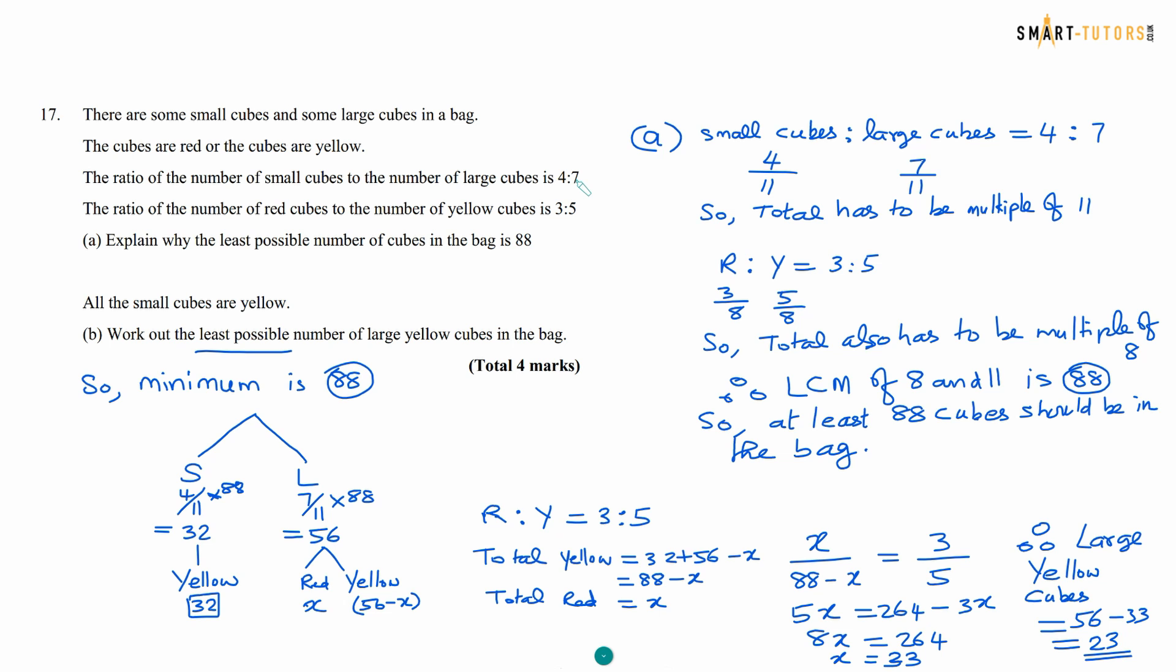Question number 17. There are some small cubes and some large cubes in a bag. The cubes are red or cubes are yellow. The ratio of the small cubes to the ratio of the large cube is 4 is to 7. So basically small cubes to large cubes is 4 is to 7. So if you put that in a fraction 4 over 11 means 7 plus 4 is 11 and large cube is 7 over 11. So the total has to be multiple of 11. So whatever the bottom number has to be. So if the total is 22, so 22 divided by 11 is 2. So it can be 44. It can be 11th multiple.